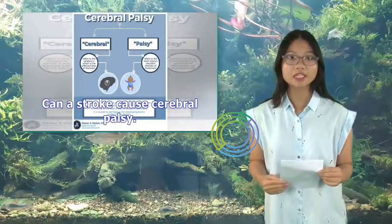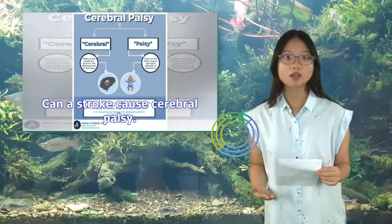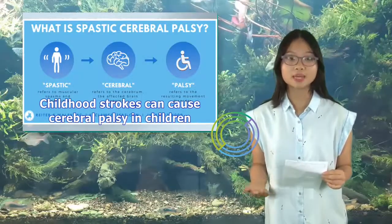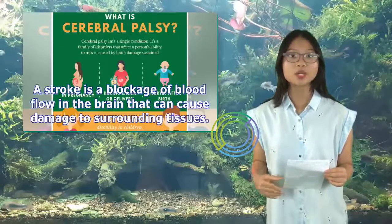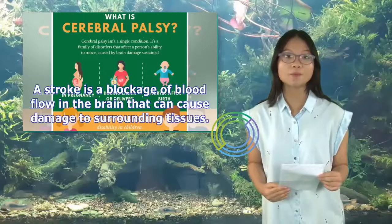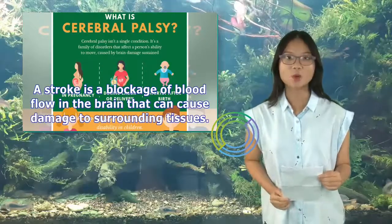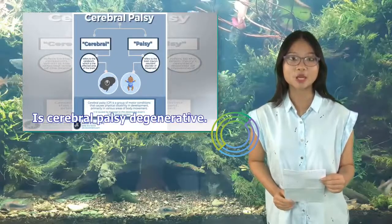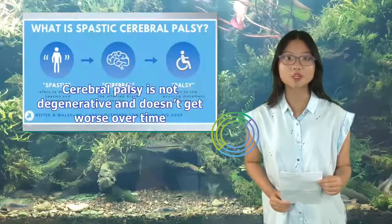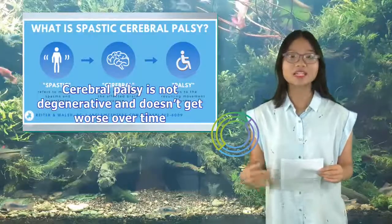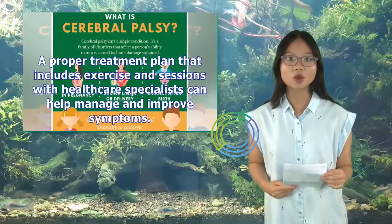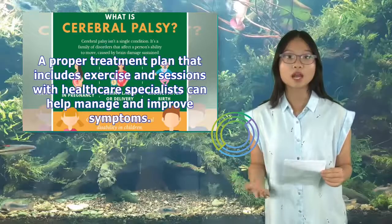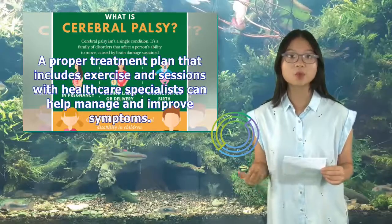Can a stroke cause cerebral palsy? Childhood strokes can cause cerebral palsy in children. A stroke is a blockage of blood flow in the brain that can cause damage to surrounding tissues. Is cerebral palsy degenerative? Cerebral palsy is not degenerative and doesn't get worse over time. A proper treatment plan that includes exercise and sessions with healthcare specialists can help manage and improve symptoms.